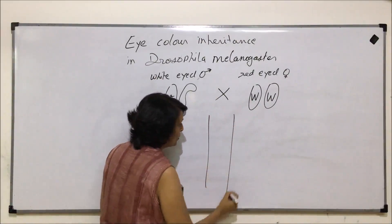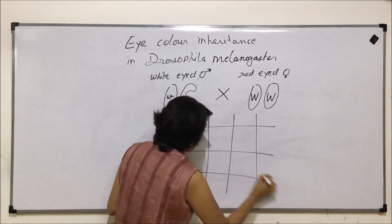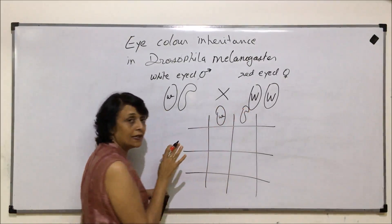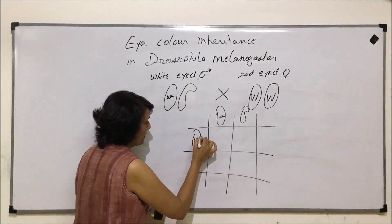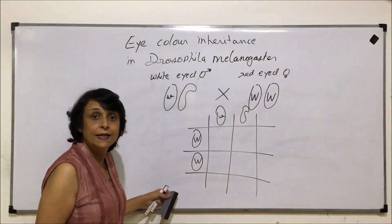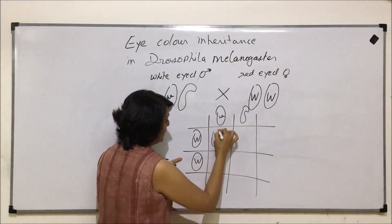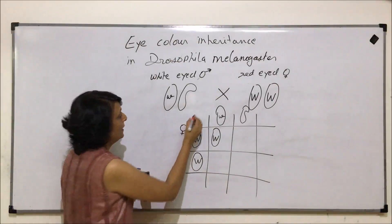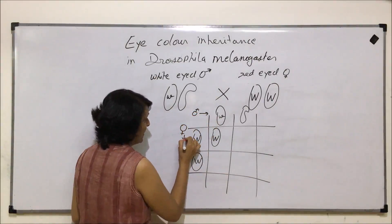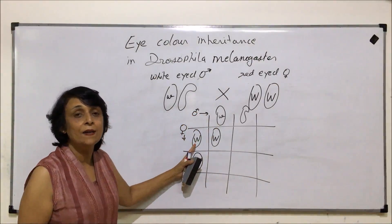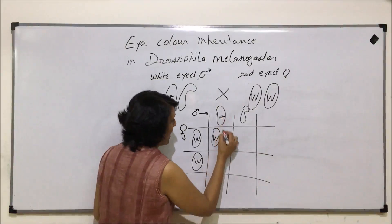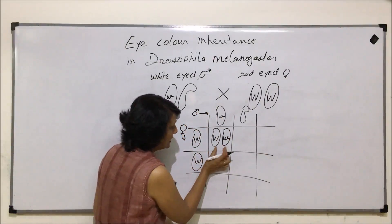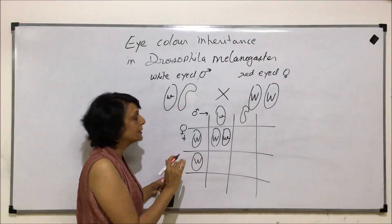Let us plot the Punnett square. The male produces two types of gametes: the X chromosome with small w, and the Y chromosome without any gene. The female produces X chromosomes each carrying capital W. When fertilization takes place we combine these gametes.